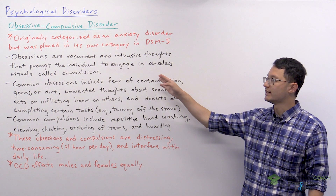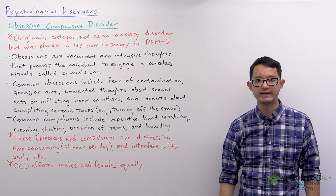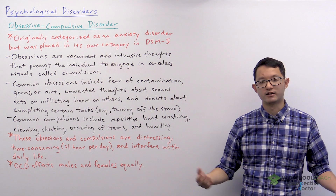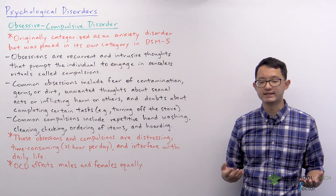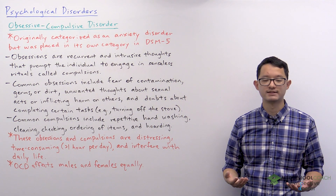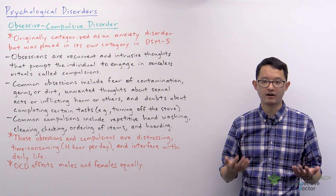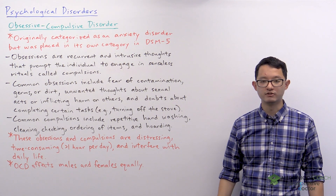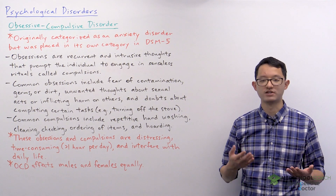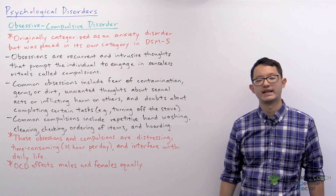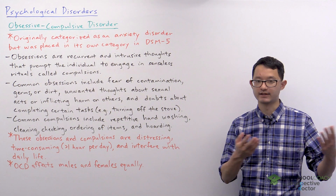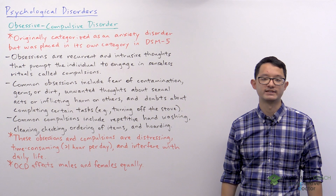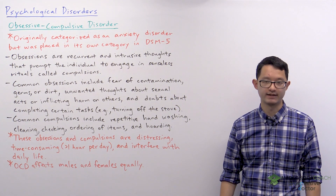Obsessions are recurrent and intrusive thoughts that prompt the individual to engage in senseless rituals called compulsions. A common example is a person obsessed with the thought that their hands are covered with dirt and germs, which causes them to keep washing their hands over and over again. In this case, the obsession is the thought of contamination on their hands, and the compulsion is the repeated washing of hands.